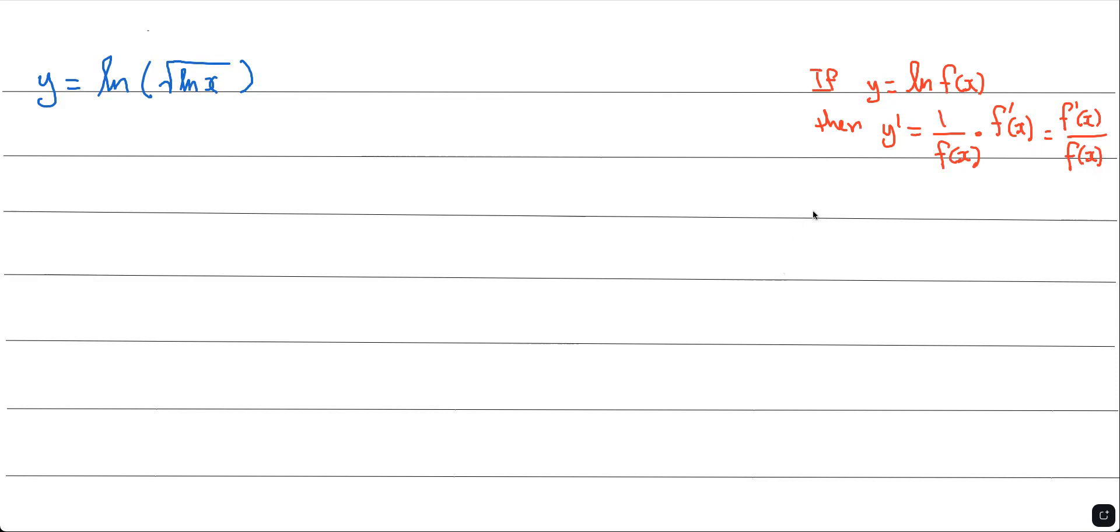Now let's look at f(x) here. f(x) in this case is this part right here. y equals ln x to the power of 1/2. That's f(x) right there. We change the radical square root to the power of 1/2 because it's the same thing.